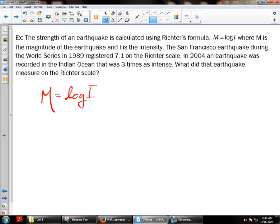Where M is the magnitude of an earthquake and I is the intensity. So the San Francisco earthquake during the World Series in 1989 registers 7.1 on the Richter scale. If you remember, that was Oakland versus San Francisco, it was during a game and it was pretty crazy. In 2004, an earthquake was recorded in the Indian Ocean that was three times as intense. What did that earthquake measure on the Richter scale?